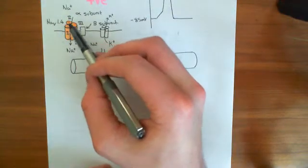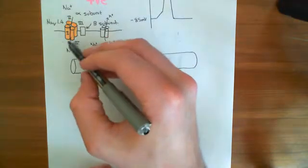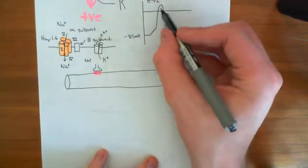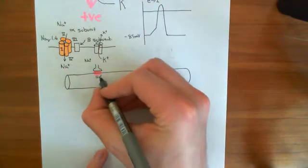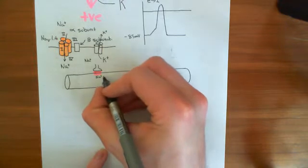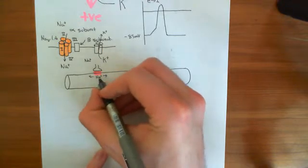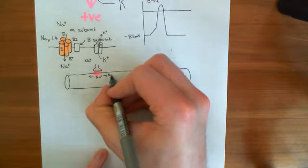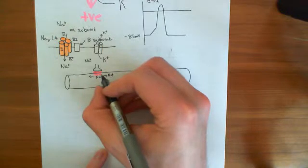When these NAV1.4 voltage-gated sodium channels open and allow sodium into the cell to trigger the upstroke of the action potential, that brings some sodium into the intracellular compartment. This sodium, which is depolarising the membrane, is going to diffuse out from the area where it initially entered, causing rises in sodium in neighbouring portions of the membrane — the portions neighbouring this one actually undergoing the action potential.